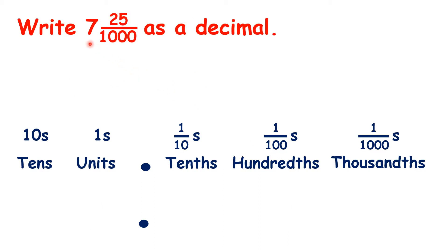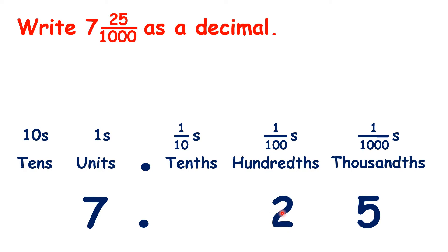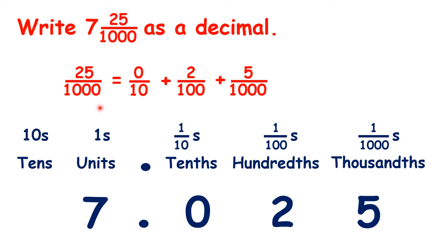How can we write 7 and 25 thousandths as a decimal? We have 7 wholes or 7 units. As the denominator is 1,000, we can't go beyond the thousandths place, so instead digits get moved to the left. Only the 5 from our numerator is in the thousandths place, and that means we have 2 in the hundredths place. Now, we need to be careful — we have 2 hundredths and 5 thousandths, but that means we need to write a 0 in our tenths place, because the second digit after the decimal point has to be the hundredths. So 25 thousandths is really the same as 0 tenths plus 2 hundredths plus 5 thousandths.